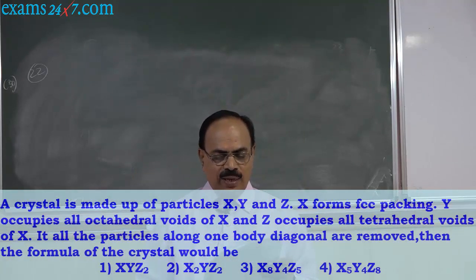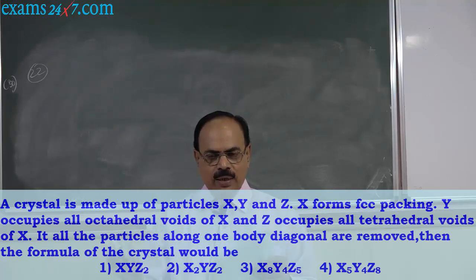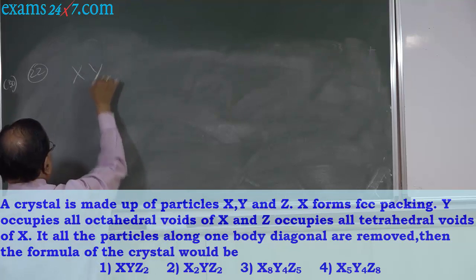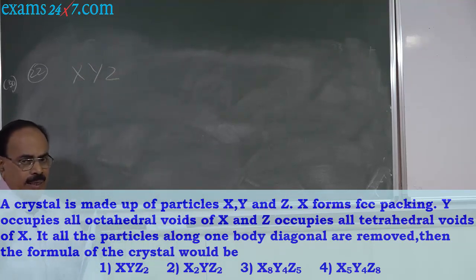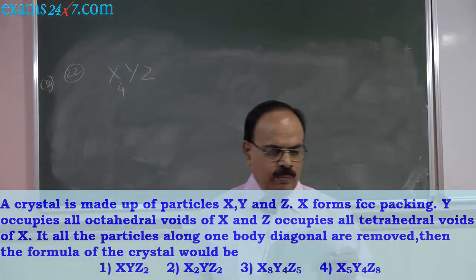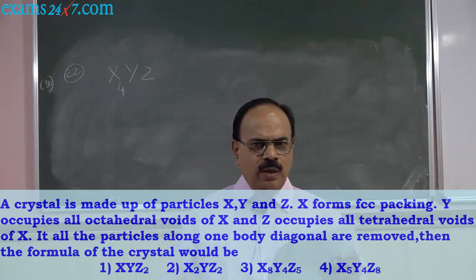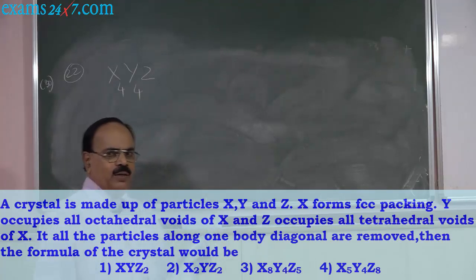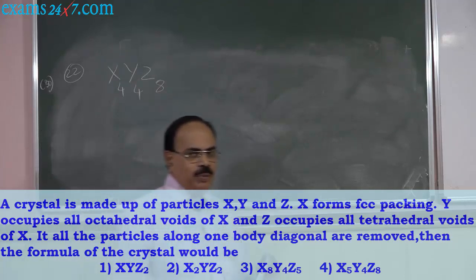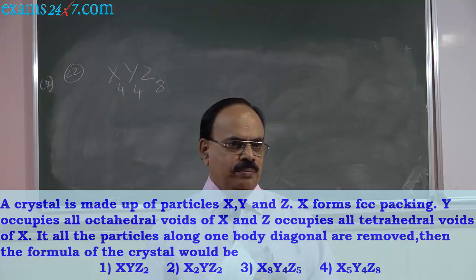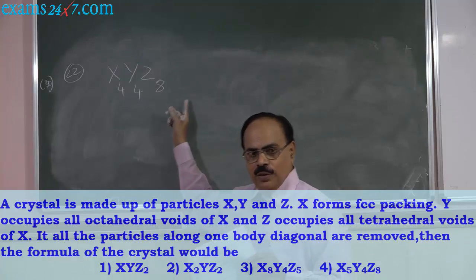A crystal is made up of particles X, Y, and Z. X forms FCC packing — so there are 4 X in the unit cell. Y occupies all the octahedral voids — there are 4 octahedral voids, so Y = 4. Z occupies all the tetrahedral voids — there are 8, so Z = 8. When no particles are removed, the formula is X4Y4Z8.